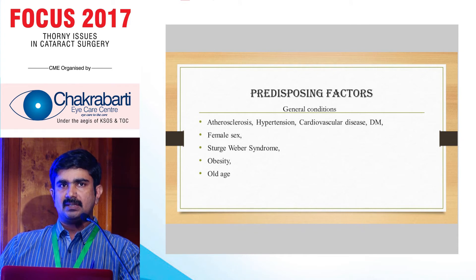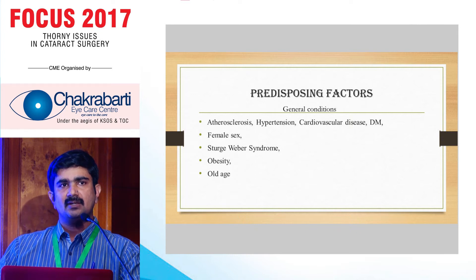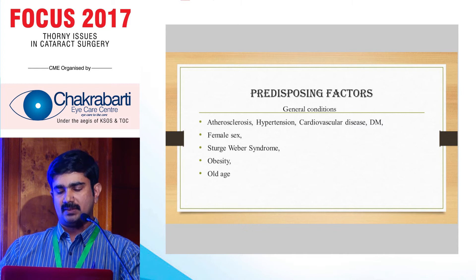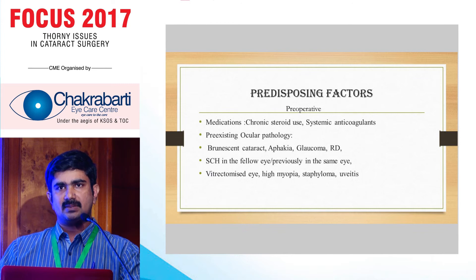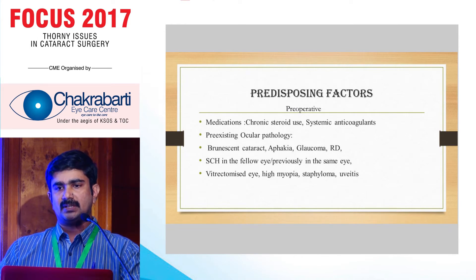General conditions that predispose to this disease include those where vessels become brittle, mainly in atherosclerosis and aging, or high blood pressure as in hypertension, female sex, and high episcleral pressure seen in Sturge-Weber syndrome and obesity. Steroids and systemic anticoagulants also predispose to suprachoroidal hemorrhage. Pre-existing ocular pathologies — brunescence, cataract, aphakia, glaucoma, retinal detachment — can all predispose to suprachoroidal hemorrhage.